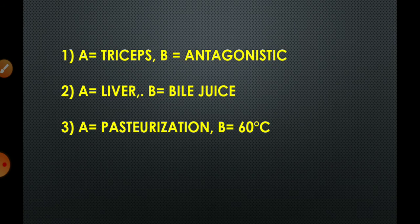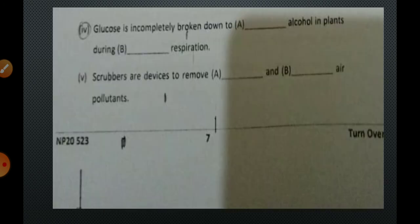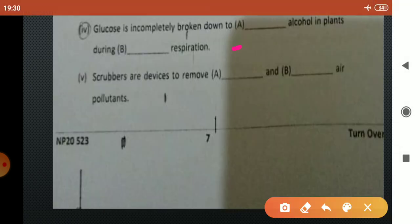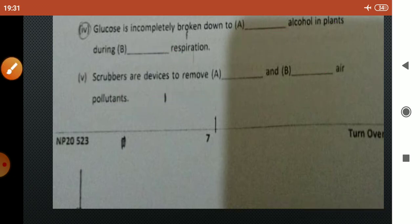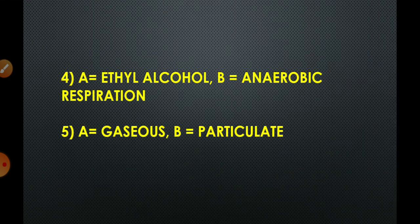The fourth one is glucose is incompletely broken down to ethyl alcohol in plants during anaerobic respiration. Anaerobic means in the absence of oxygen. And the last one is scrubbers are devices to remove gaseous and particulate air pollutants.